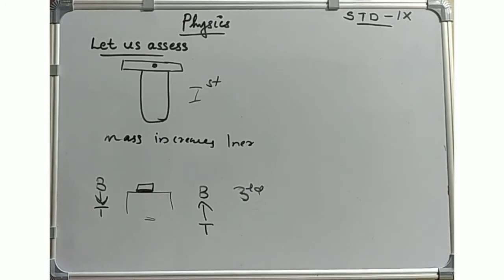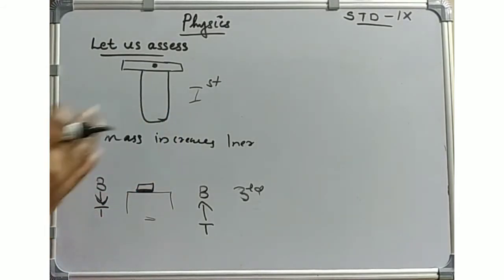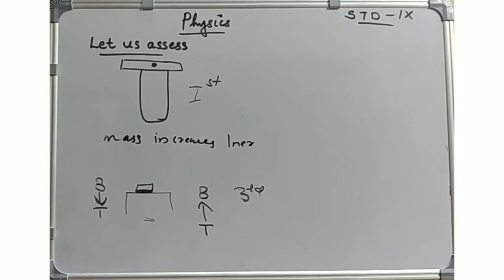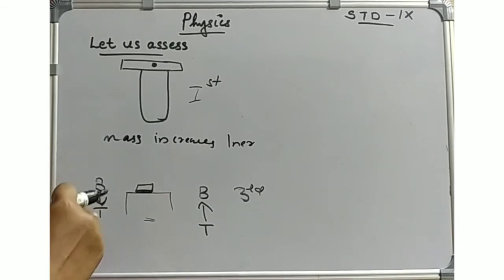The inertia of rest is the principle behind this. A car and a bus are traveling at the same velocity. Which has greater momentum? The bus has a greater mass than the car, so even at the same velocity, the bus has greater momentum.